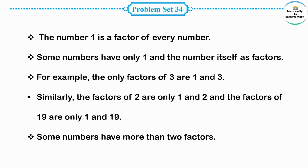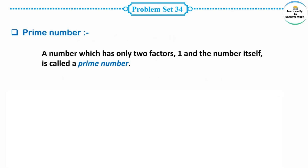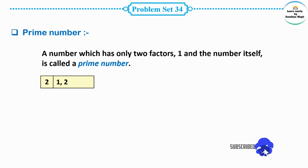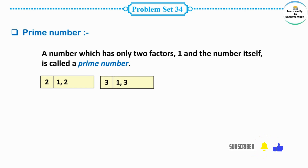Some numbers have more than 2 factors. A number which has only 2 factors — 1 and the number itself — is called a prime number. For example, the number 2 has only 2 factors: first factor 1, and second factor the number itself, 2. Similarly, 3 also has two factors: first factor 1 and second factor the number itself. Such numbers are called prime numbers.